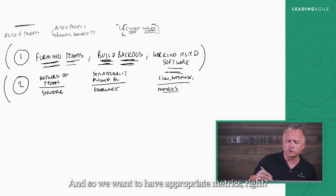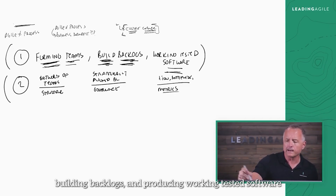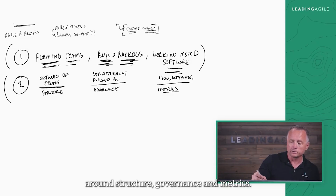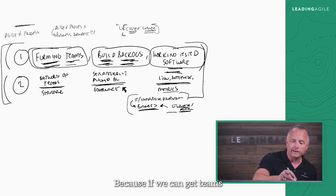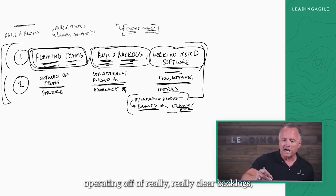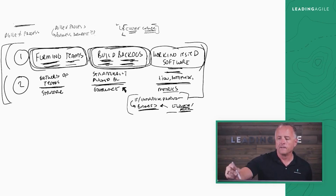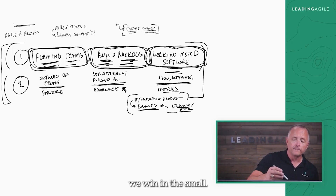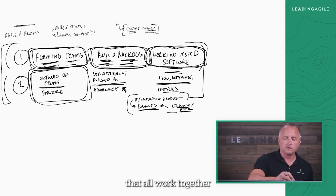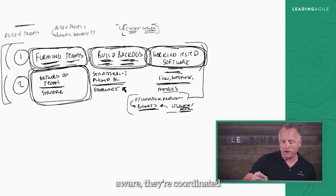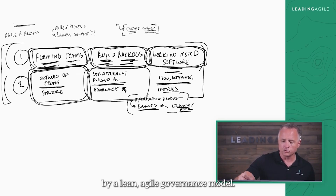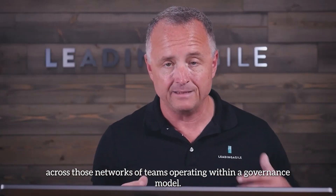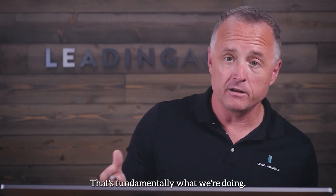So we want to have appropriate metrics. We're going to talk about how forming teams, building backlogs, and producing working-tested software leads to an enterprise-class conversation around structure, governance, and metrics. If we can get complete cross-functional teams operating off really clear backlogs and producing a working-tested increment of software at the end of every sprint, we win in the small. And if we can get networks of teams that are dependency-aware, cross-cutting concern-aware, coordinated by a lean agile governance model, with metrics that measure the actual flow of value — that's fundamentally what we're doing.